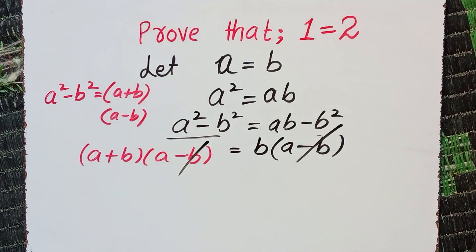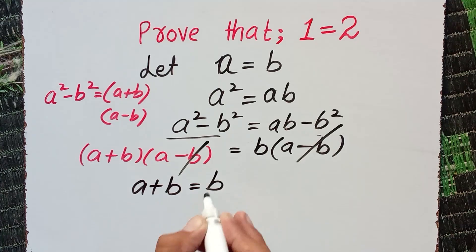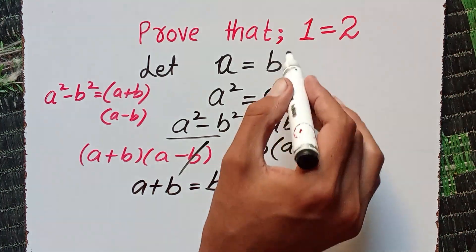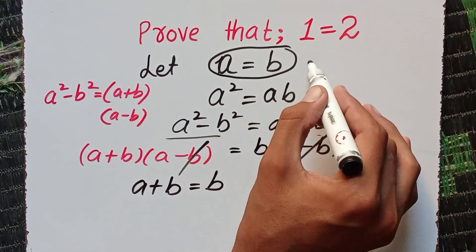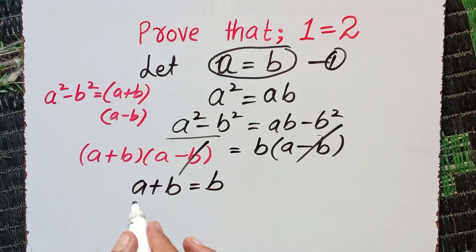Now (a minus b) and (a minus b) cancel with each other, and it becomes a plus b equals b. From here we can use that a equals b in equation number one, so I can put the value of a which is equal to b.